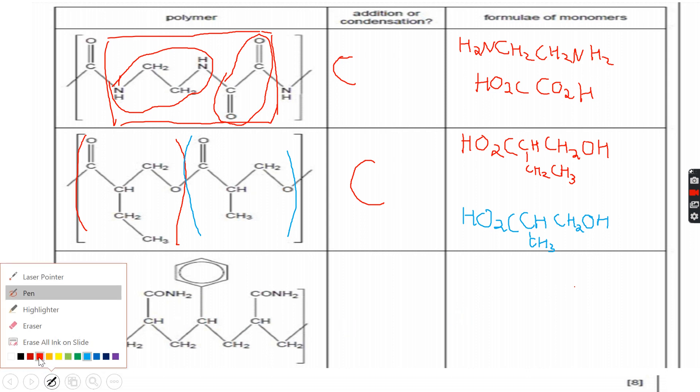Now in the third case, it has to be an addition polymer. First of all, it has to be an addition polymer because there are no ester or amide linkages, and plus there are carbon-carbon single bonds throughout. So it has to be an addition polymer, and if you are confused because of the skeletal formula, I'll simplify it for you, but first let's identify how many monomers we have.